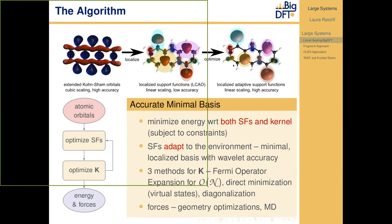The key point is that the support functions adapt to their environment — we optimize them using a minimization approach with constraints. As you can see in this example, the orbitals associated with carbon atoms look slightly different depending on which atom they're on because of different local chemical environments. We also have three different methods implemented for optimizing the density kernel: the main one for linear scaling is the Fermi operator expansion, but we also have direct minimization and diagonalization. The direct minimization approach is particularly useful when we need a few virtual states represented by the basis.